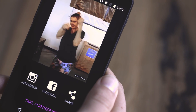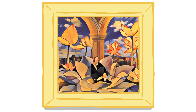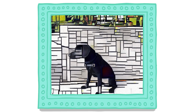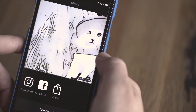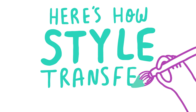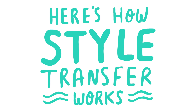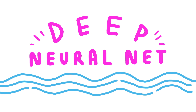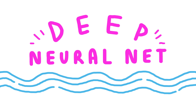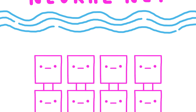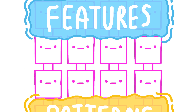Depending on what app you're using or what experiment results you're looking at, the details of how they do their thing are going to be different. But in general, here's how style transfer works — which means more talk about deep neural nets. A deep neural net is called deep because it has many different layers of neurons, and each layer is good at detecting different features and patterns.